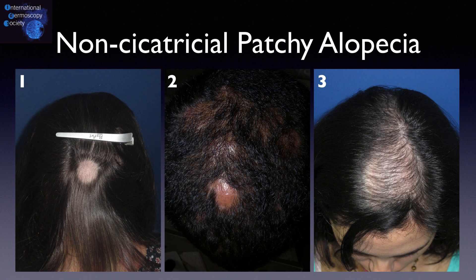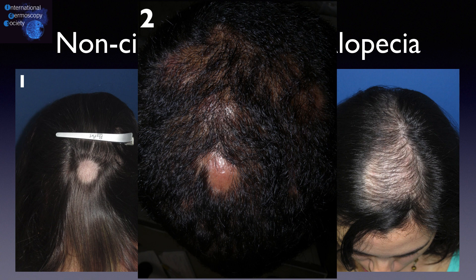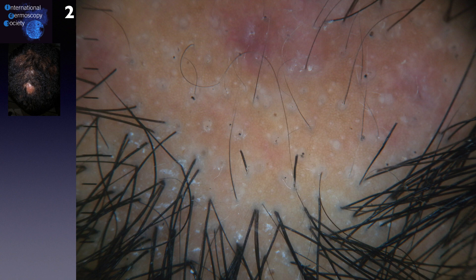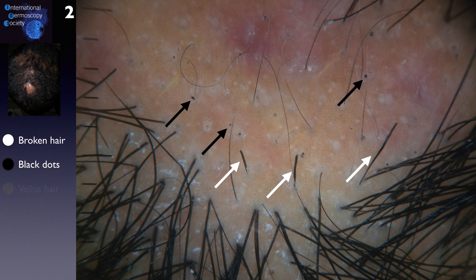In the second case, we have a patch alopecia in a black scalp. From trichoscopy, we can see many broken hairs and black dots. There are some vellous hairs and a reddish area in the center, resembling an inflammatory acne.